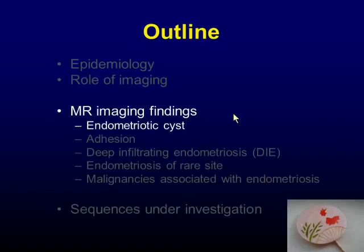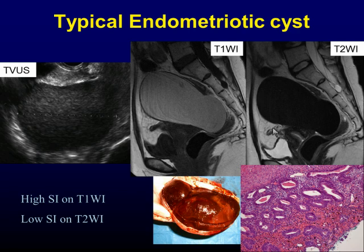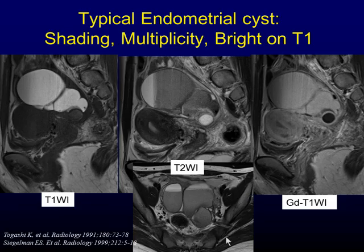Let's move on to the MRI imaging findings of endometriotic cysts. This is the case of typical endometriotic cysts. Typical ultrasound findings are the cystic mass with low internal echoes, sometimes accompanying septations. MR imaging findings are cystic lesions with high signal intensity on T1-weighted image and low signal on T2-weighted image, reflecting the blood product. An important and common feature of endometriotic cysts is shading on T2-weighted image. Shading is caused by chronic bleeding with high concentration of iron and blood within the cysts.